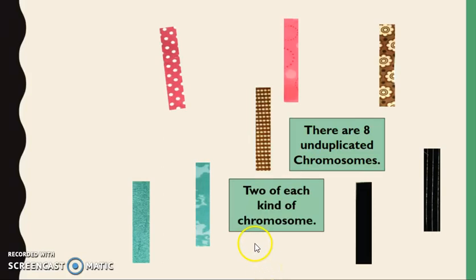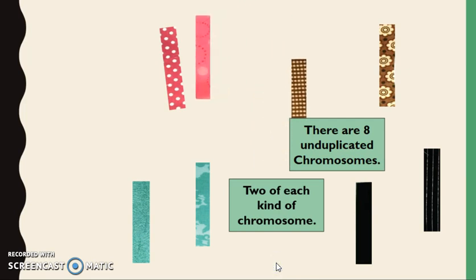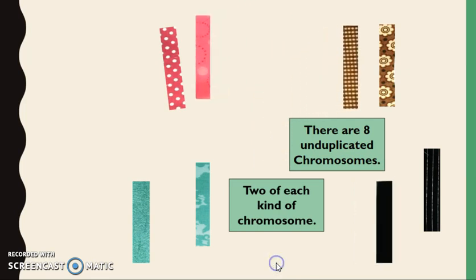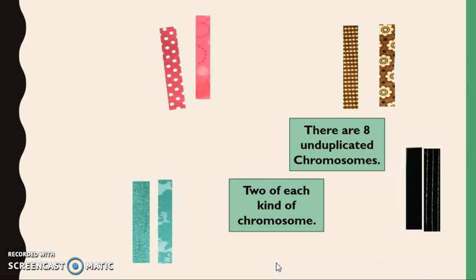Here we have eight unduplicated chromosomes, and as diploids we have two of each kind. When we have two of each kind of chromosome, we call these homologous chromosomes.